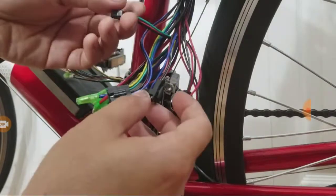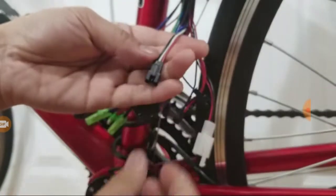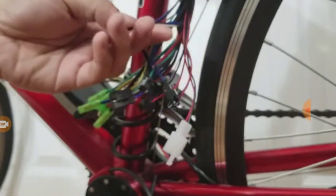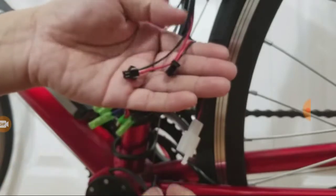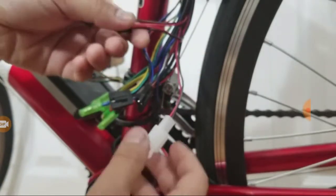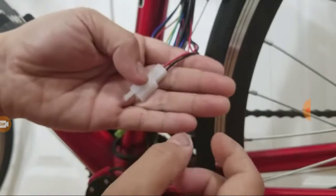three-pin connector right here. This goes to the pedal assist sensor. And then we have this pair of two-pin connectors—these will go to the brake levers.